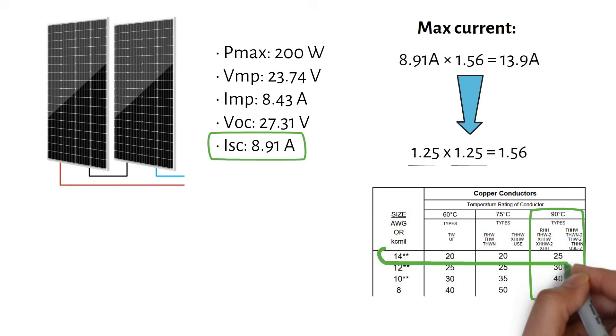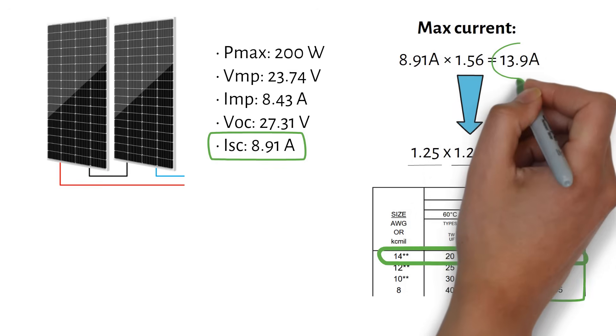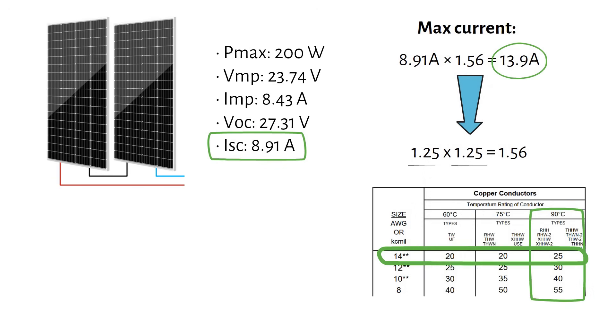A 14 gauge or 2.5 mm square cable is already enough to safely carry that current. So from a pure current point of view, 14 gauge is the minimum.